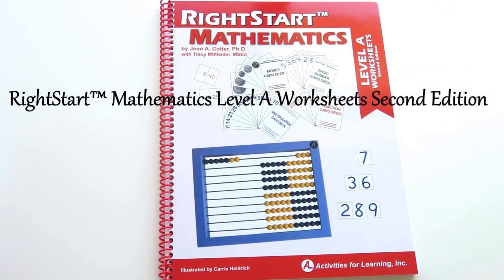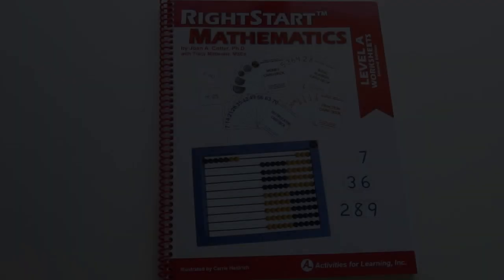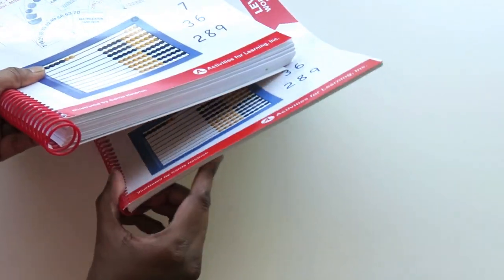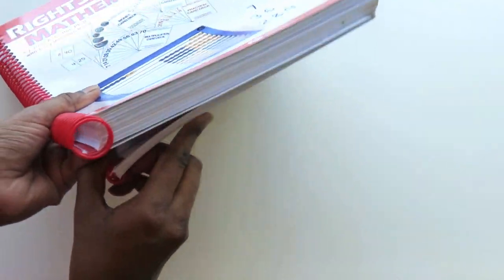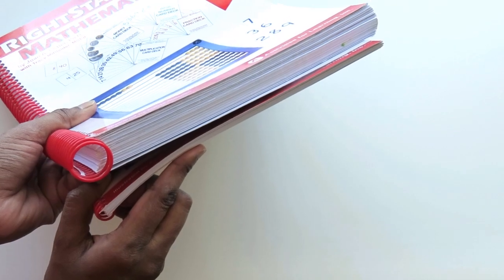This is the level A worksheet booklet. As you can see compared to the guide it is extremely thin. That's because this program focuses mainly on play-based learning and not on worksheets. Here is what they look like.